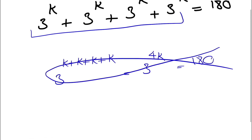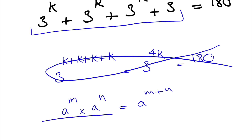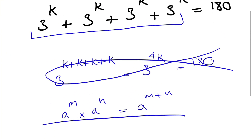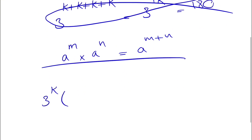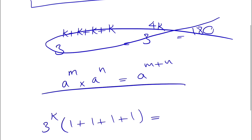The correct way uses the laws of exponents. When we have a to the power of m times a to the n, that equals a to the m plus n — but here we have addition, not multiplication. So we factor out 3 to the k: we have four of them, giving us one plus one plus one plus one, or simply 4 times 3 to the k.